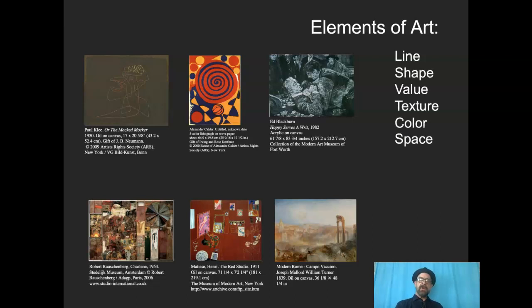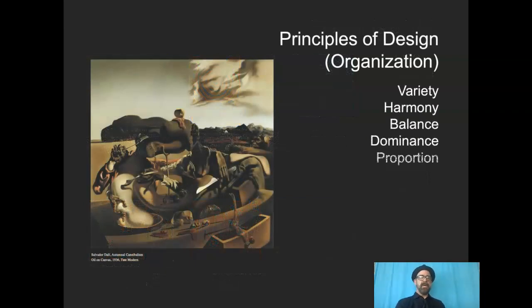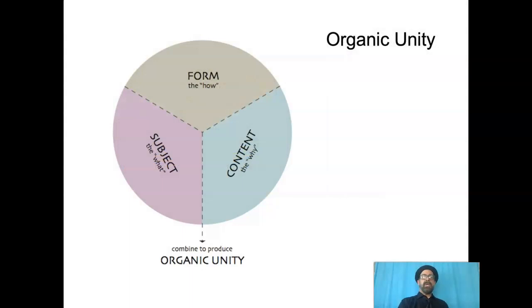Here are the elements of art — we'll talk about those in depth a little more later. The building blocks: line, shape, value, texture, color, and space. The principles of design — variety, harmony, balance, dominance, proportion, economy, and movement — these organize those elements. When the subject, the content, and the form all work together, the thing is said to have organic unity. It's meant to be that way; it just works.